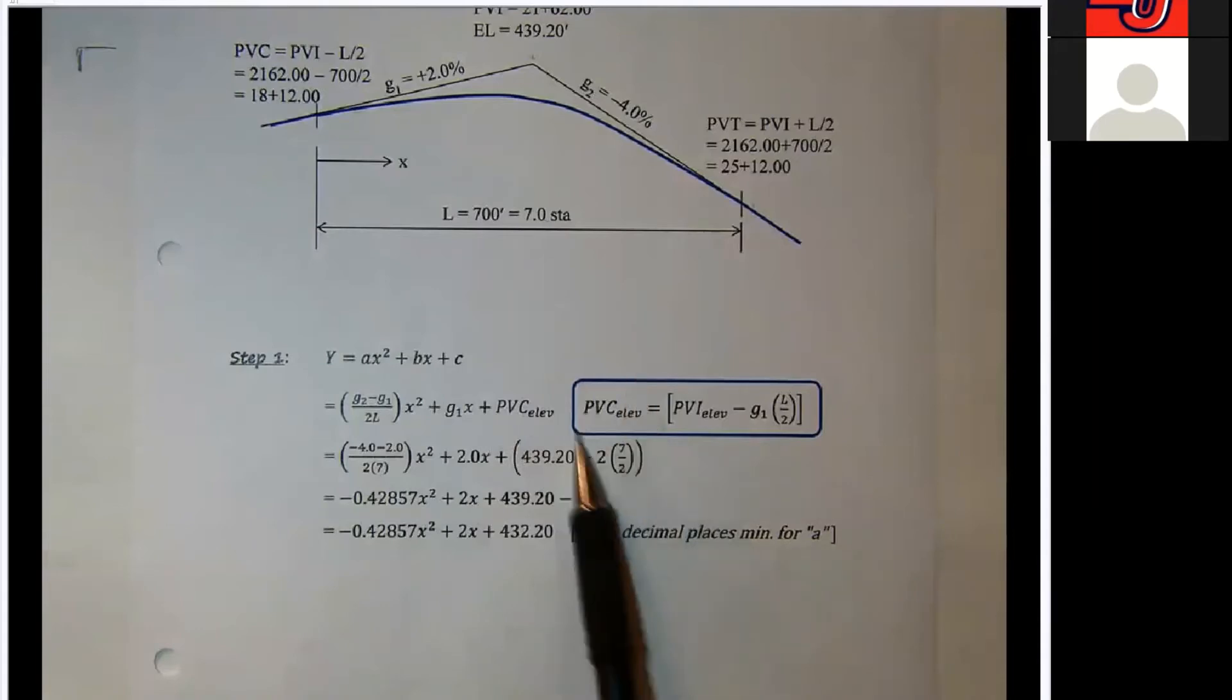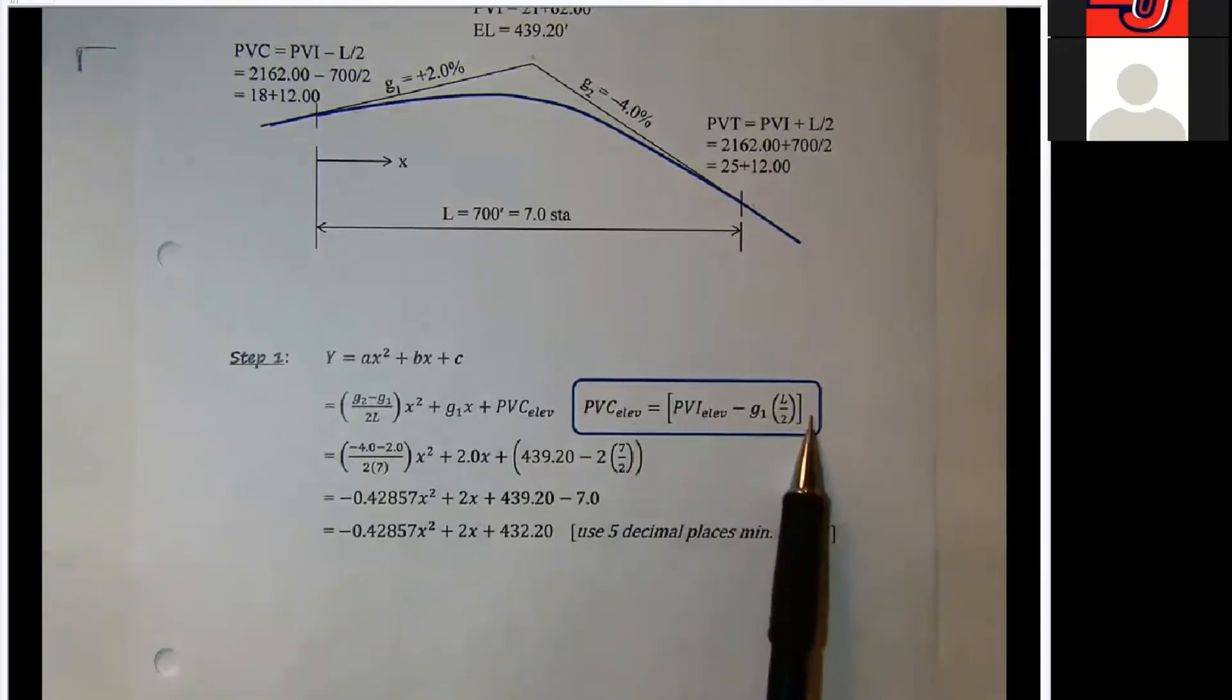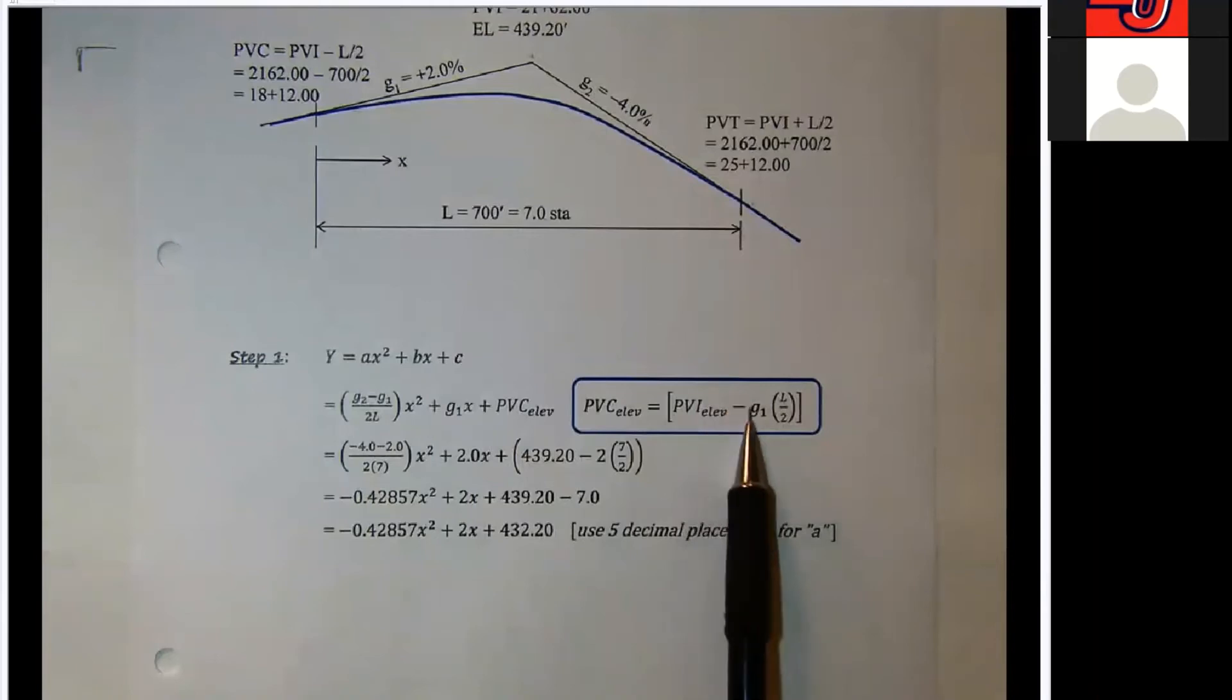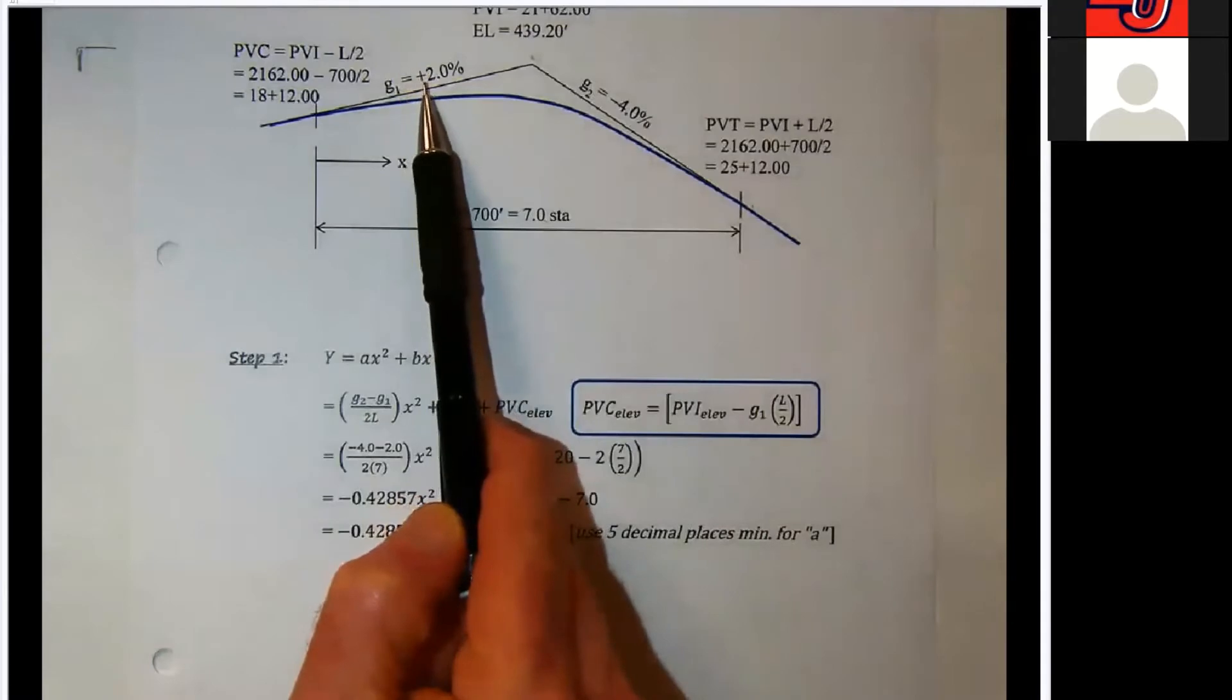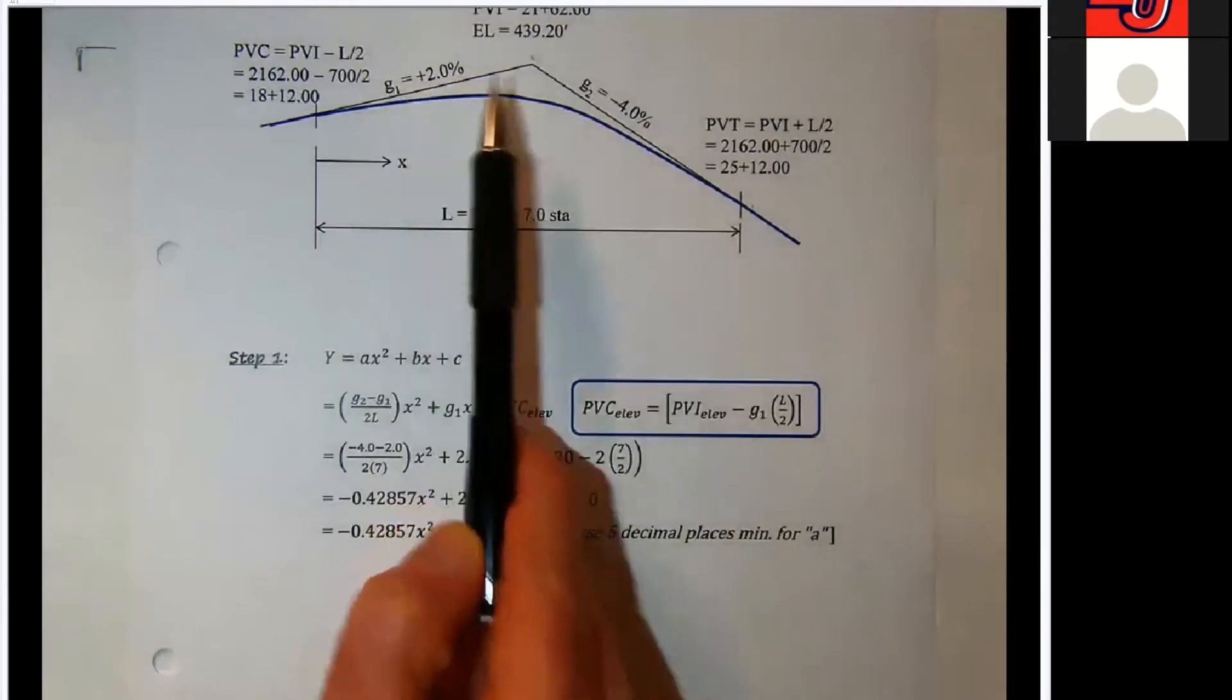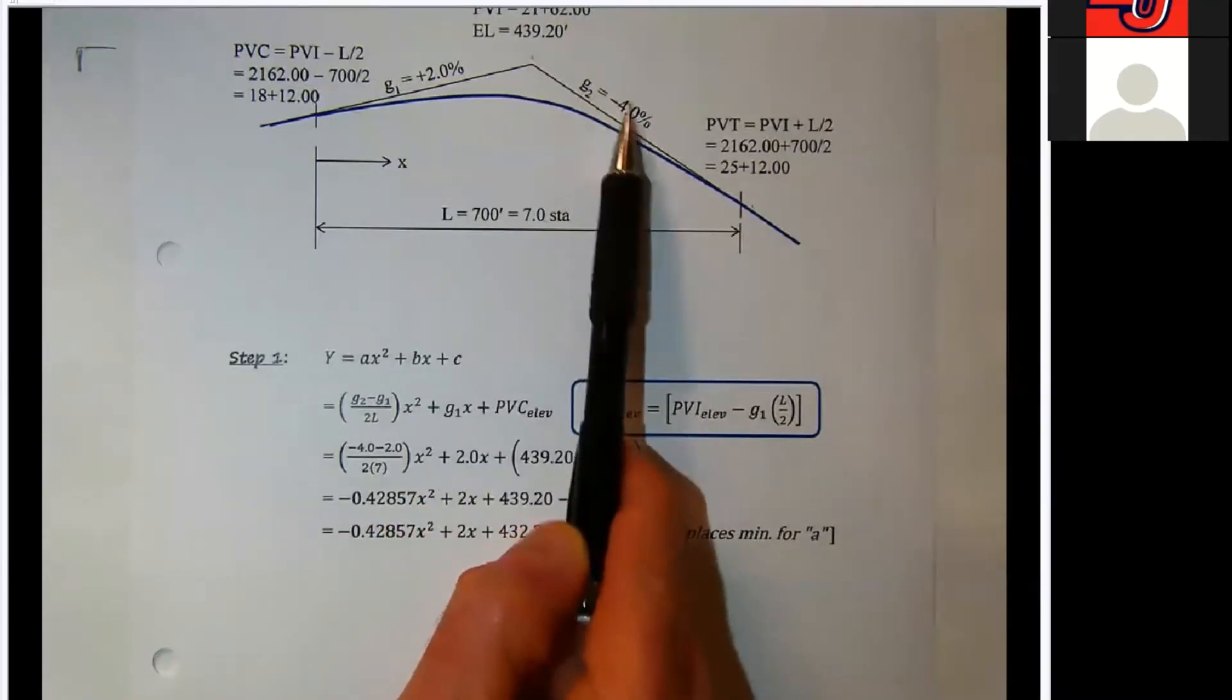Over here in the box to the right is a general formula to calculate the PVC elevation. It's the PVI minus G1 times L over 2, so the subtraction here automatically takes into account whether the G1 grade is positive or negative.